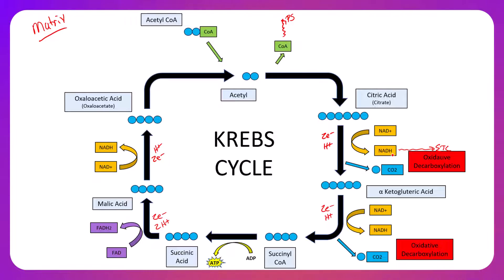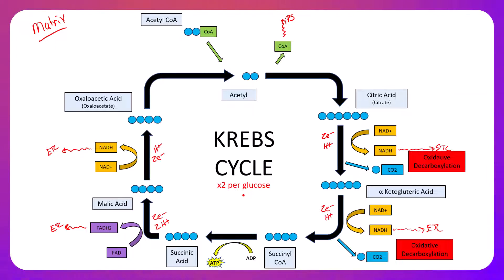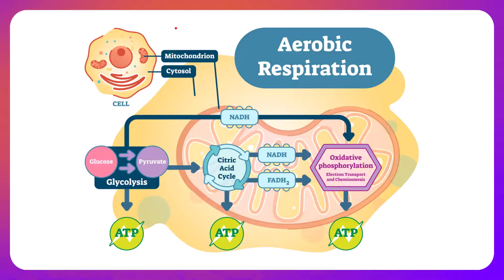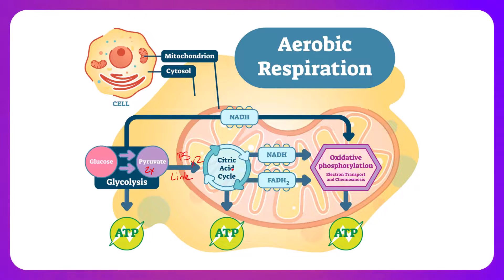Every time NADH is produced it will head to the ETC. FADH2 will also head to the ETC — that is the chemiosmotic pathway. It is important to note that the Krebs cycle happens twice per glucose, as a result of two acetyl-CoAs being produced per glucose during the prep step. Zooming out holistically: glycolysis takes glucose and produces two pyruvates; those pyruvates enter the prep step or link reaction, each leading to the Krebs cycle, which happens twice per glucose.